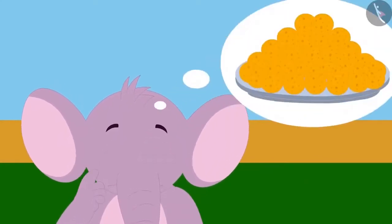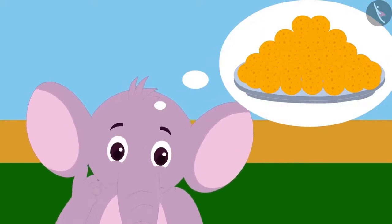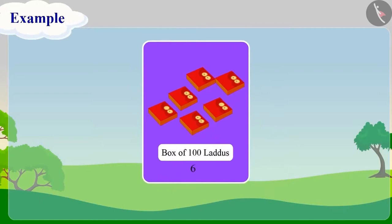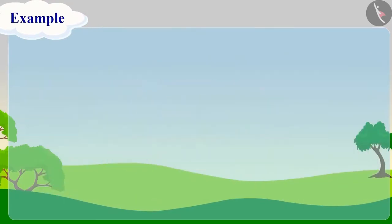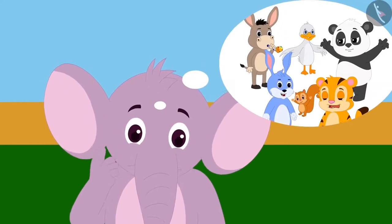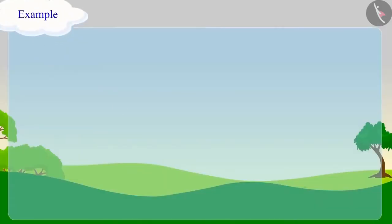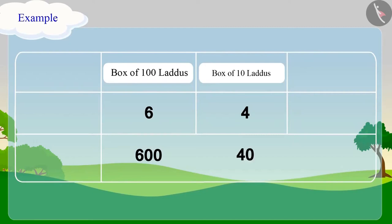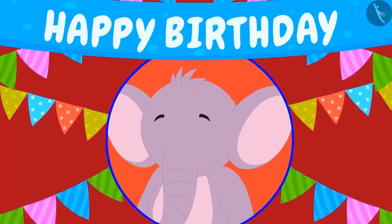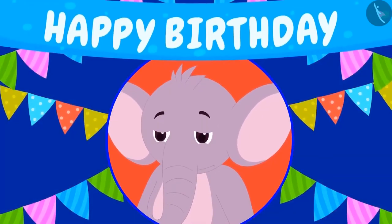Appu wonders how many flowers Chanda gave him in total. Adding 3 garlands of 100 = 300 flowers, plus 2 garlands of 10 = 20 flowers, plus 7 single flowers. Using the expanded form process: 300 + 20 + 7, Chanda gave a total of 327 flowers to Appu. Now Appu wants laddus for his guests — he took 6 boxes of 100 laddus, 4 boxes of 10 laddus and 3 single laddus. That gives 600 + 40 + 3 = 643 guests coming to Appu's party.